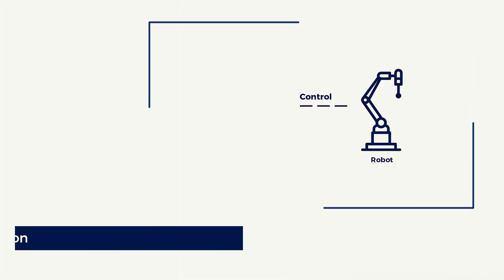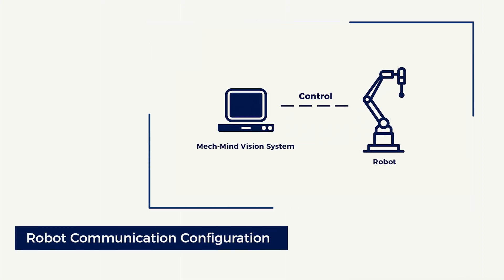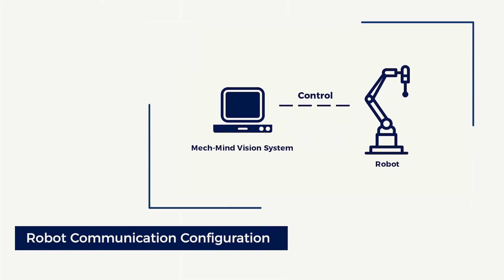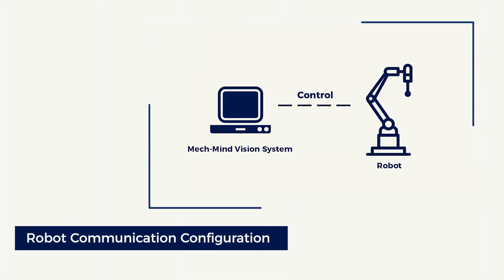Next, in robot communication configuration, robot programs and configuration files will be loaded into the robot system so that communication between the robot and the vision system can be established.